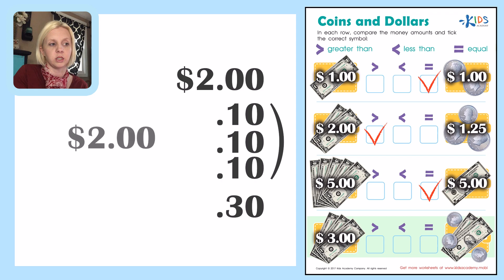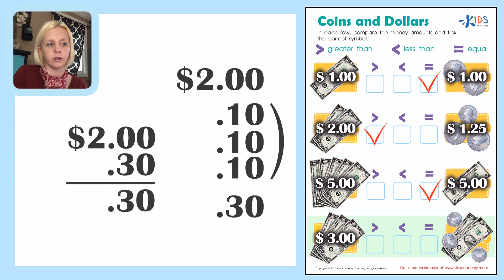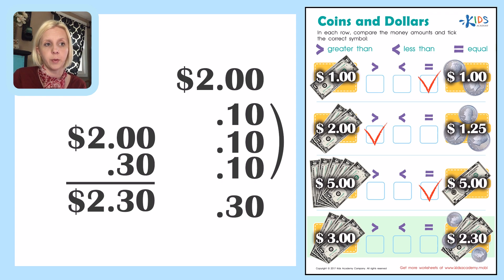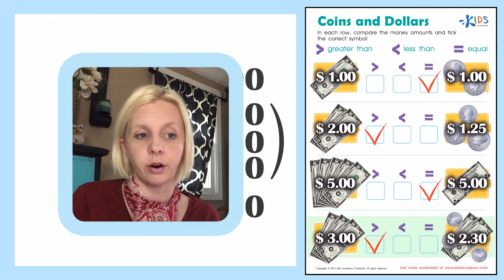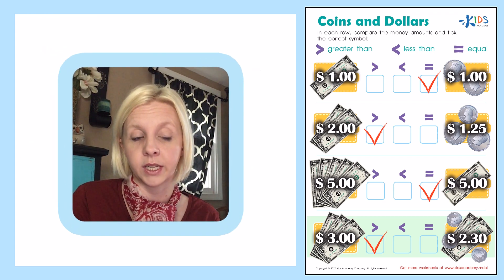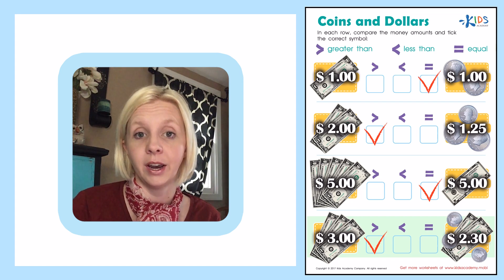Now add the 30 cents to the two dollars: zero plus zero is zero, zero plus three is three, bring down the decimal and the two — that's two dollars and 30 cents. So which is greater: three dollars or two dollars and thirty cents? Three dollars is greater, so we put our check mark on the greater than sign since we want it to face the bigger number. Nice job today — we are finished, great work!